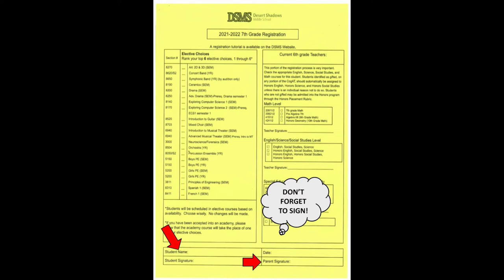The registration form you return to your 6th grade teacher must be complete. A complete form includes names and signatures from you, your parent or guardian, and your 6th grade teacher.